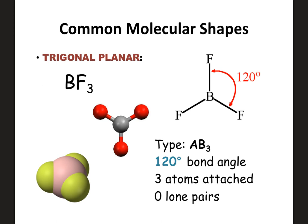Now we're getting into shapes with three things attached. Trigonal planar has three things attached to the center and zero lone pairs — it ends up nice and flat. The bond angle is 120 degrees because you have three bonds in a complete 360-degree circle. That's when the valence electrons are as far apart as possible. Three attached, zero lone pairs on the center, 120-degree bond angle — trigonal planar, nice and flat.